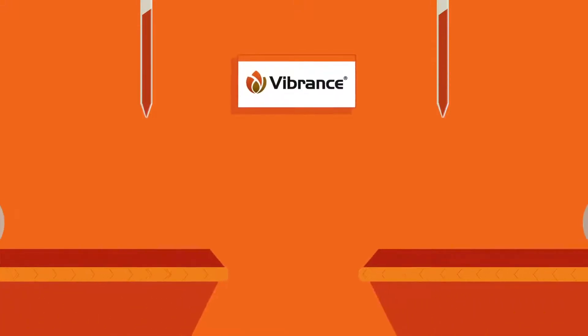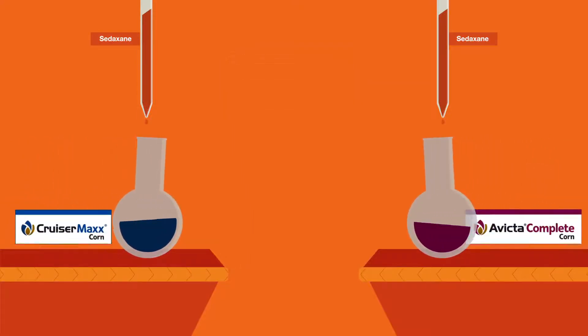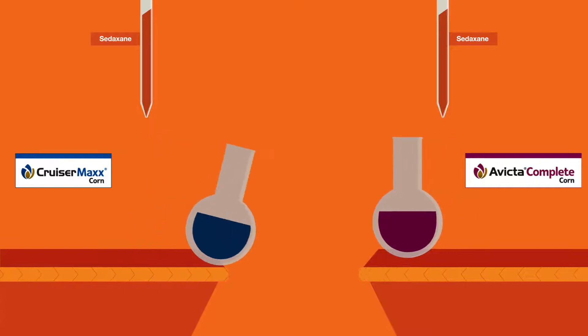Developed specifically for seed treatment, Vibrance fungicide brings a unique active ingredient to Cruisermax corn and Evicta Complete corn, giving them best-in-class protection against Rhizoctonia.